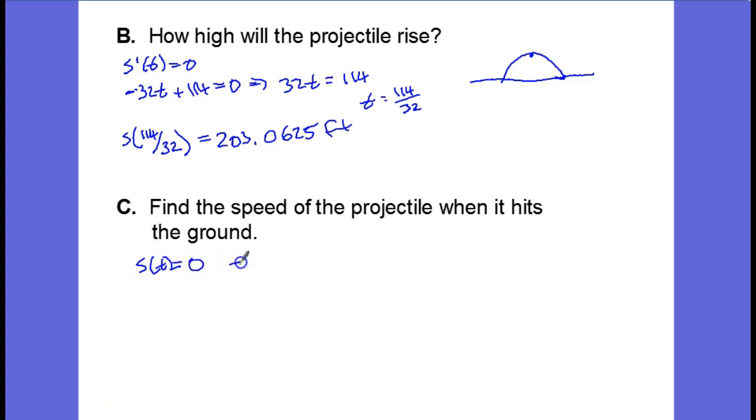So we have negative 16t squared plus 114t equals zero, and factoring this we have negative 2t times quantity 8t minus 57 equals zero. Setting each factor equal to zero, and of course that is the starting time—it's launched from the ground.